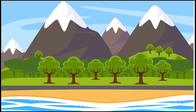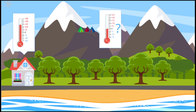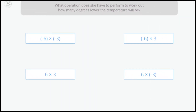Her house is at sea level, and there the temperature is 14 degrees. The camp is 3 miles higher. She needs to know how many degrees lower the temperature will be at the camp in order to choose the clothes she's going to bring. What operation does she have to perform to work out how many degrees lower the temperature will be?